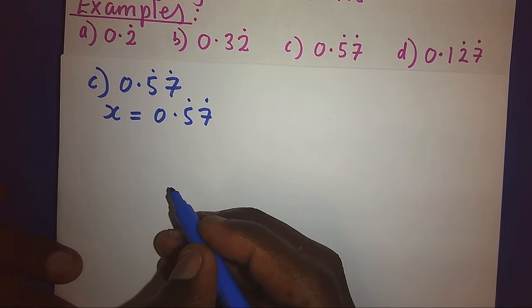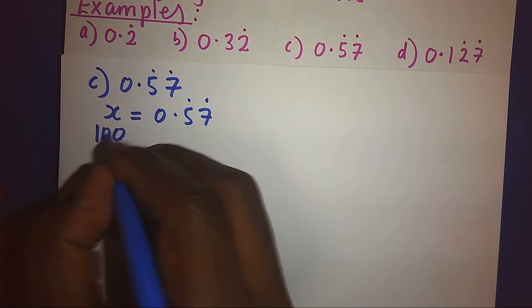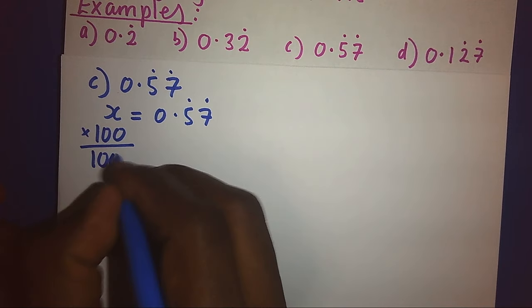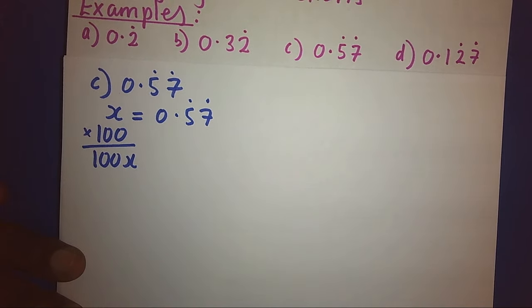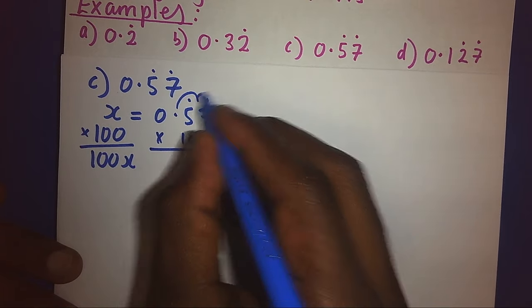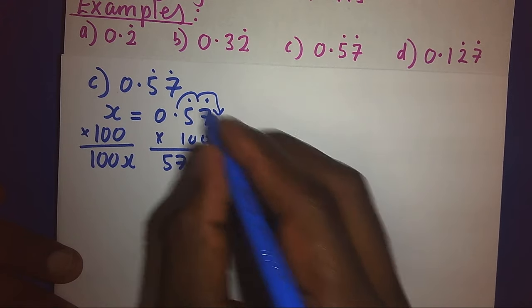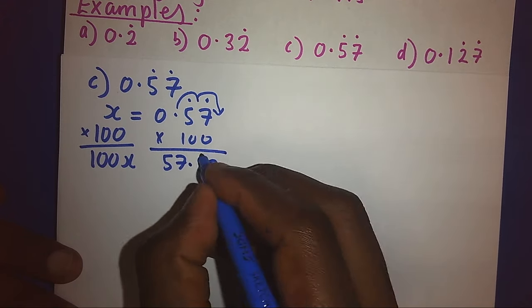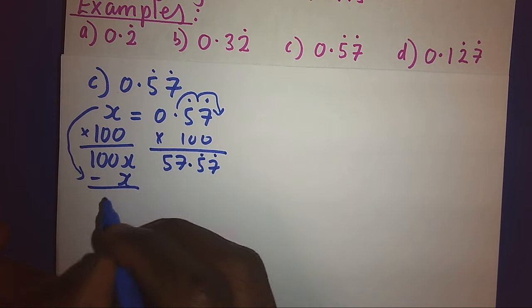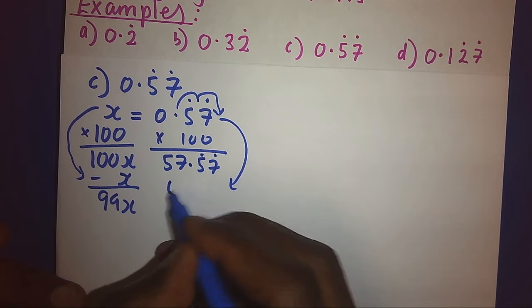1, 2, and we get 57 points. Bring back the recurring numbers. We shall subtract with our starting statement, and we get 99x. And even this side, we shall subtract with our starting statement.